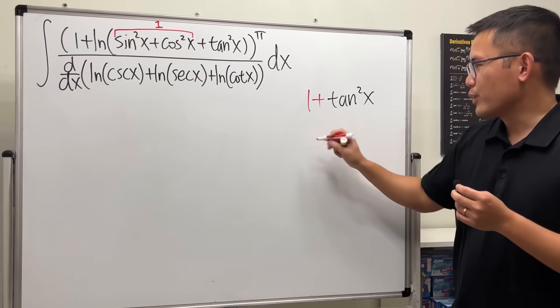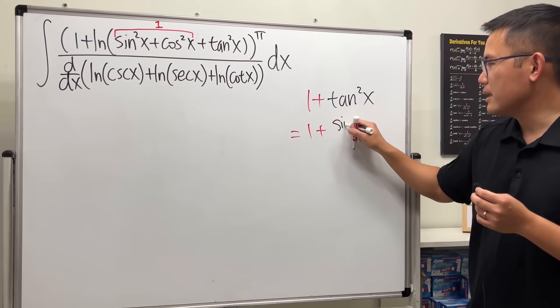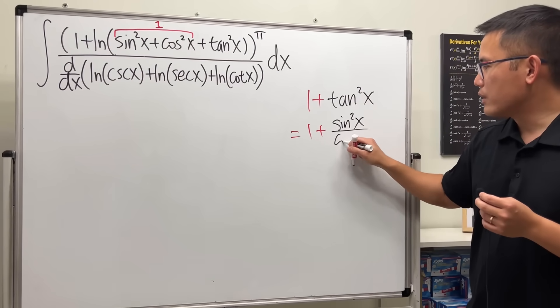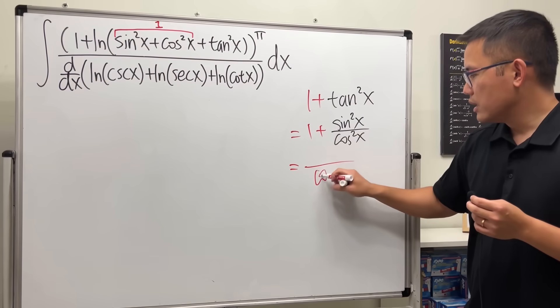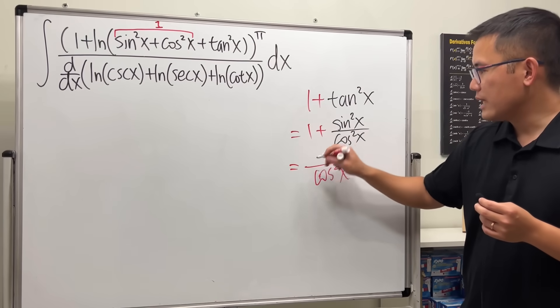And if you want to work this out real quick, I'll show you. This is 1 plus, this is the same as sine squared over cosine squared, and then we can get a common denominator, which is just cosine squared.